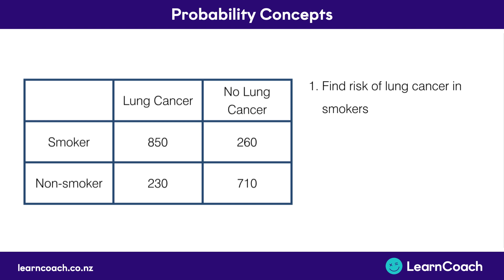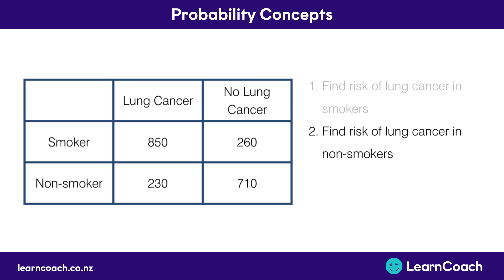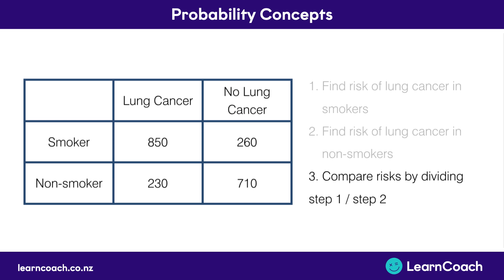First, we need to find the risk of lung cancer in smokers. Then we need to find the risk of lung cancer in non-smokers. The last step is to compare the two risks by dividing step one by step two.